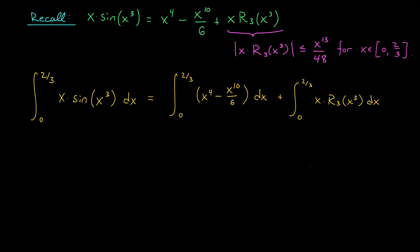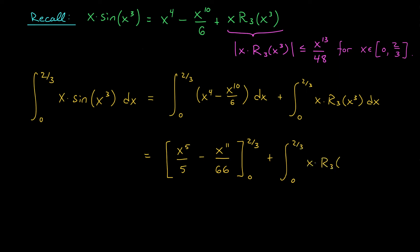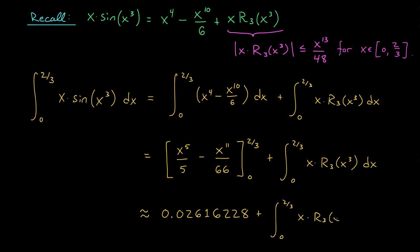Let's evaluate the first integral. An antiderivative of x⁴ minus x¹⁰/6 is x⁵/5 minus x¹¹/66, evaluated from 0 to 2/3. We still have our error term, which we'll handle on the next slide. Plugging in 2/3 and evaluating with a calculator gives approximately 0.02616228, plus the remainder term.